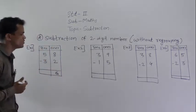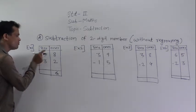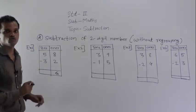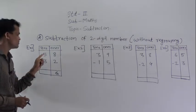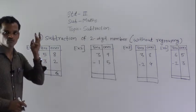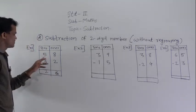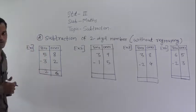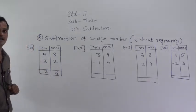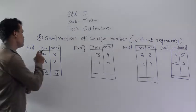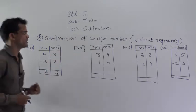8 minus 2 is 6. Now the tens place: 5 minus 3. Subtract 3 from 5 by counting backward — 3 fingers from 5. Before 5: 4, 3, 2. So 5 minus 3 equals 2. Therefore, 26 is the difference of 58 and 32.